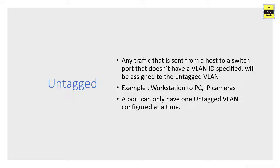Before going to VLAN tagging, it's good to understand untagged or native VLAN. Any traffic sent from a host — like your computer, laptop, or IP cameras — to a switch port that doesn't have a VLAN ID specified in the data packet is considered an untagged VLAN. For example, if you have a port configured as VLAN 100 and your computer is connected to that port, any packet from your computer to that port is an untagged VLAN packet. This is typically used when connecting workstations or IP cameras that don't tag their own traffic, and a port can only have one untagged VLAN configured at a time.